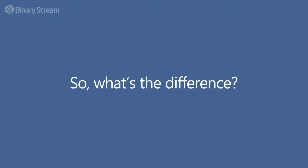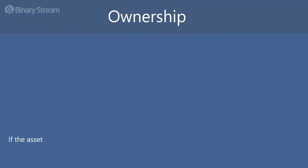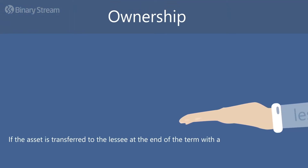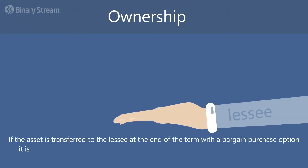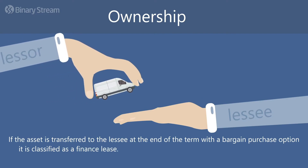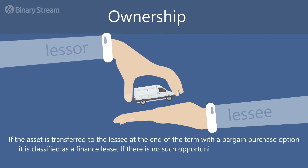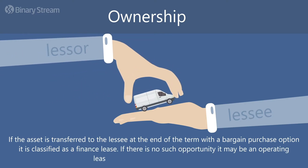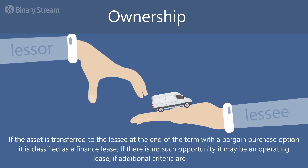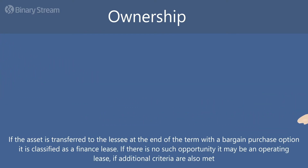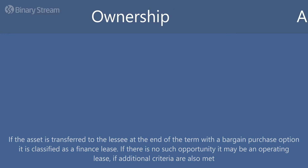So what makes them so different? If the asset is transferred to the lessee at the end of the term with a bargain purchase option, it is classified as a finance lease. If there is no such opportunity, it may be an operating lease if additional criteria are also met.